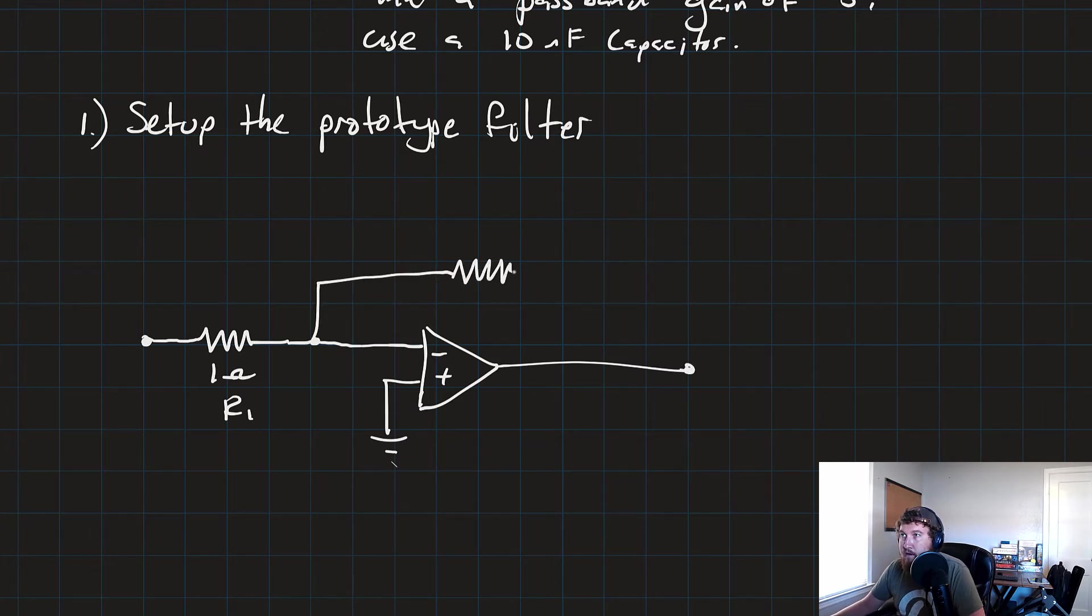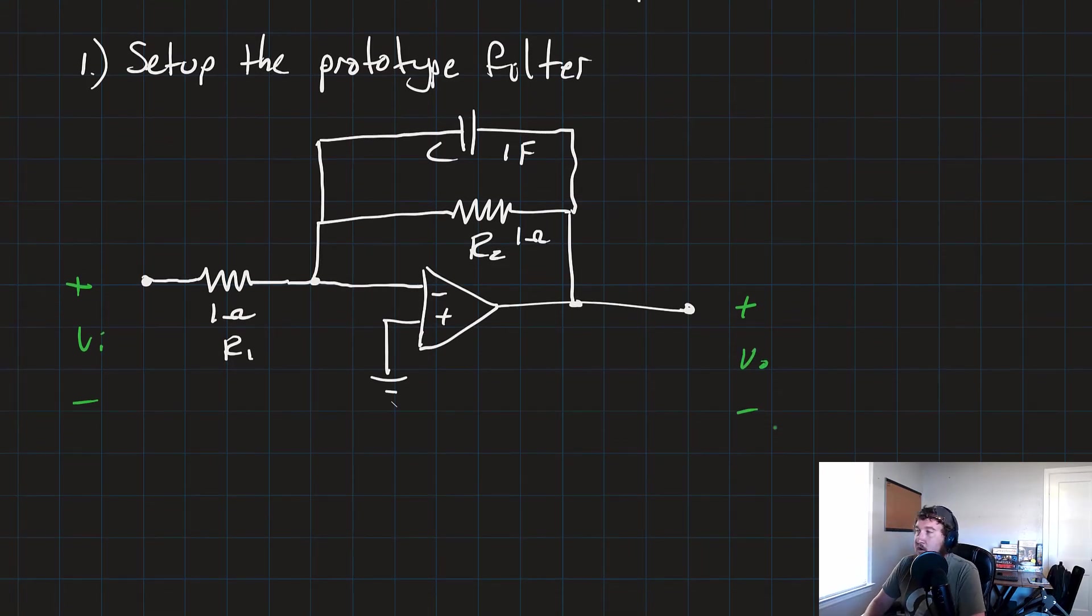We've got our output. And then we've got our other R2, which we start with at just 1 ohm. And our capacitor C, which we'll start with 1 farad. And then we have our output and input voltages, plus minus Vin, and plus minus Vout. So that's our prototype filter.